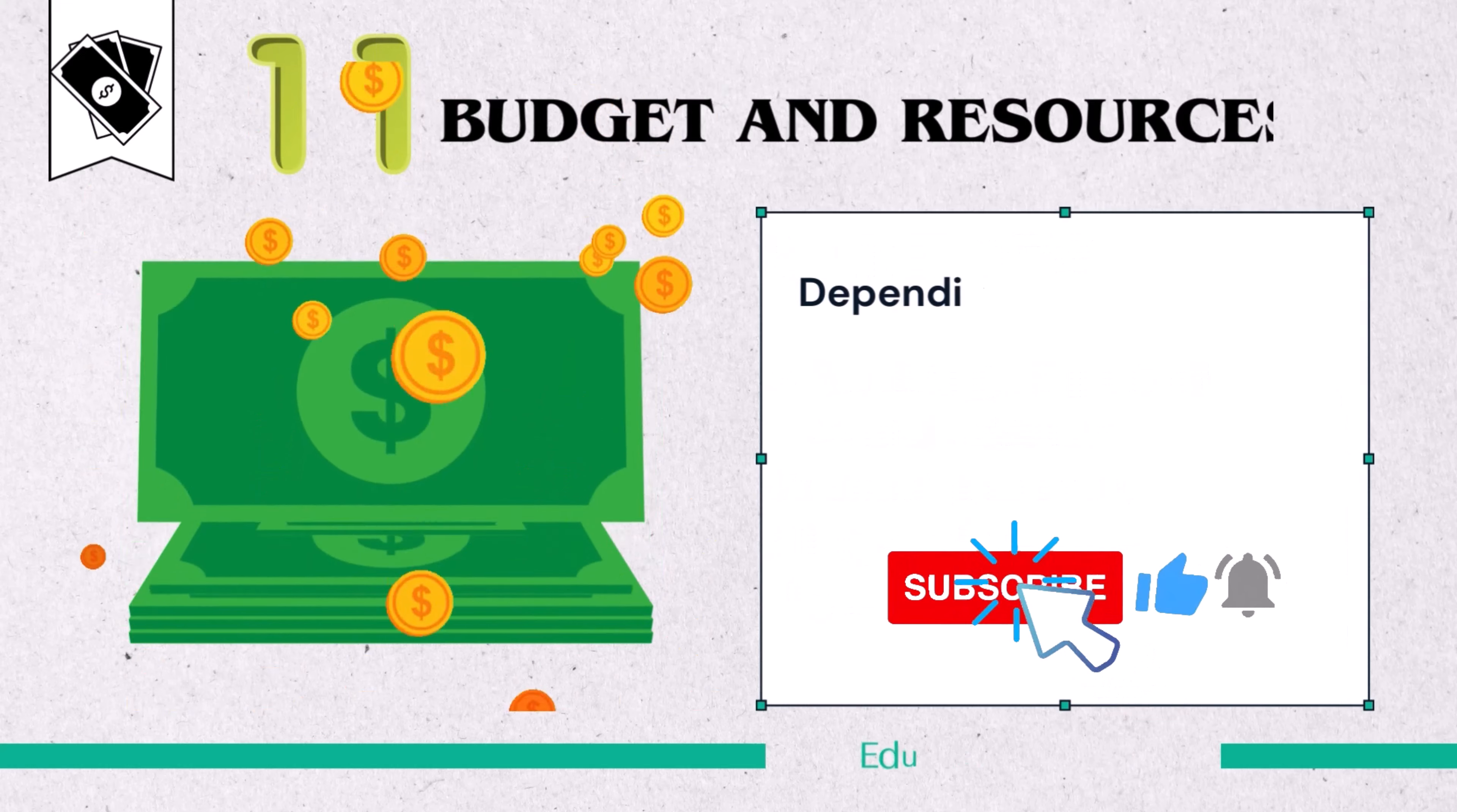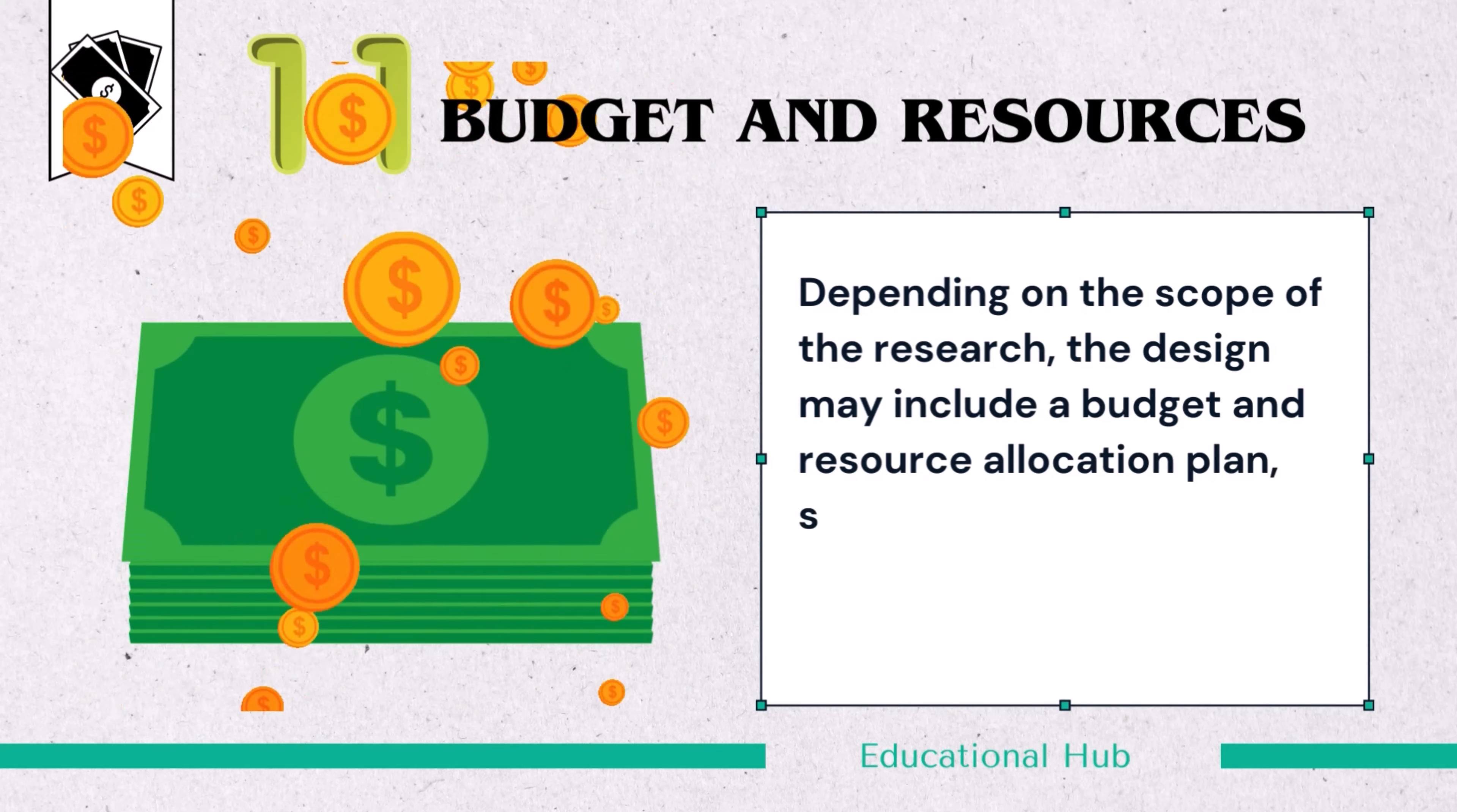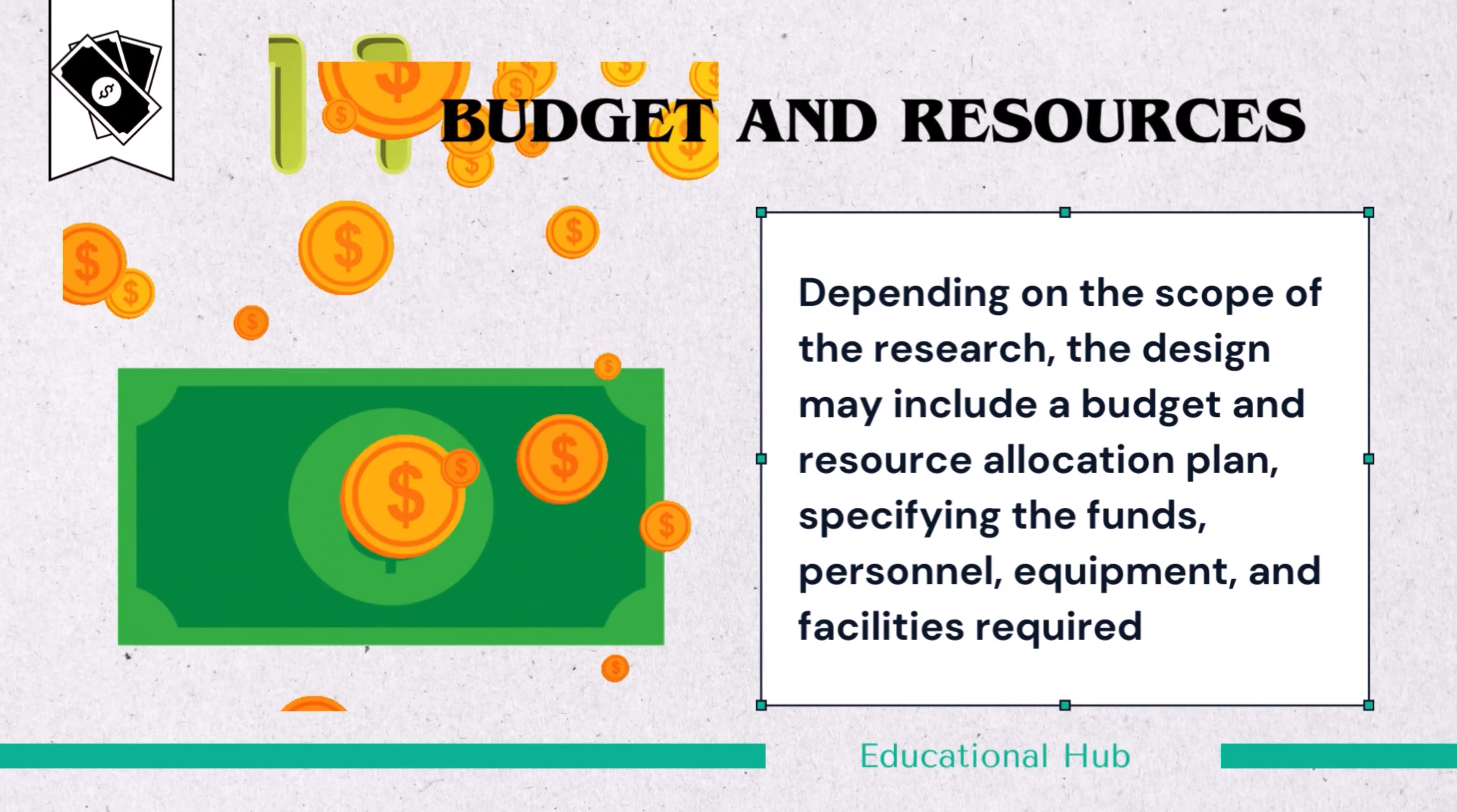11. Budget and resources. Depending on the scope of the research, the design may include a budget and resource allocation plan, specifying the funds, personnel, equipment, and facilities required.